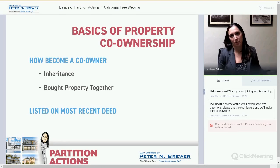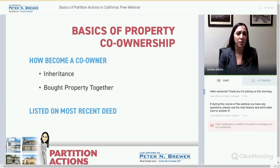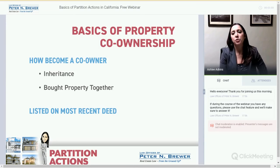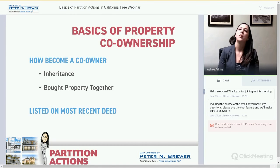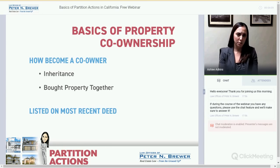How do you become a co-owner? This can happen either through inheritance — when a mom, dad, or grandpa puts in their trust that certain beneficiaries will get the property, usually more than one, and then you become a co-owner. Second, you buy the property together — husband and wife, brother, sister. Third, the property can be gifted to you. Sometimes when people get married, or a mom will transfer a portion of her interest in the property to her son or daughter, that's another way to become a co-owner.